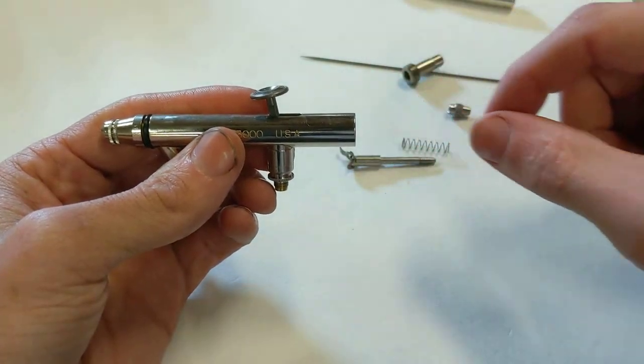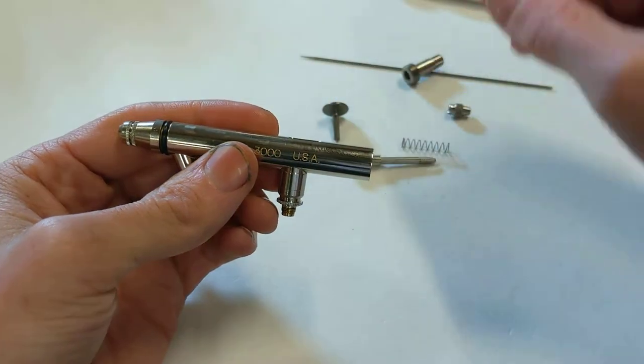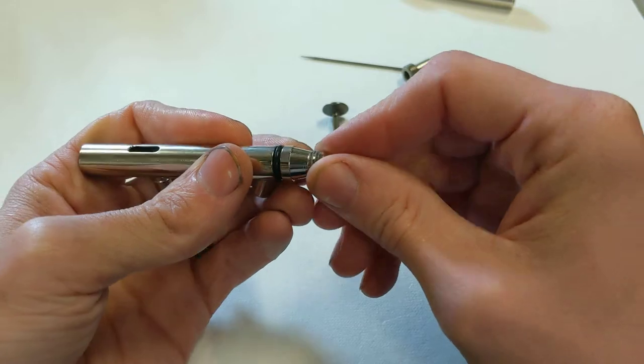Now that you've taken the needle off, the trigger is free to come out. So we'll take that out so it doesn't fall out. Then we'll move to the front of the airbrush. There's a couple different parts up here.